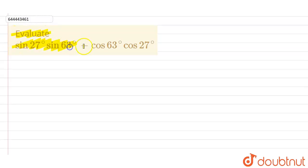Okay, so our given trigonometric equation is sin 27 degree sin 63 degree minus cos 63 degree cos 27 degree. We can write it as: